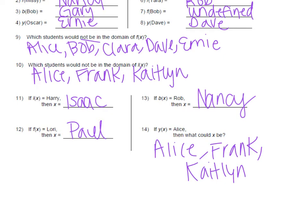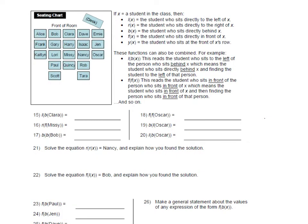Moving on to the back. The first page was just function notation — finding an input or plugging in an input, looking for the output, or going backwards. Now we're actually going to start doing what's called compositions. All of our rules are still the same: left of, right of, behind, in front, or front row — but we're going to combine these two together. You always want to start with the most inward parentheses, closest to the input, and then work your way out.